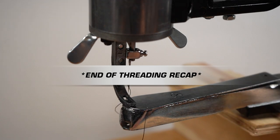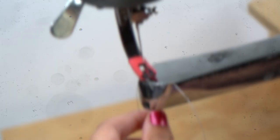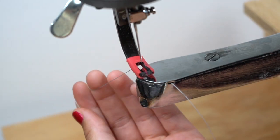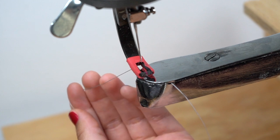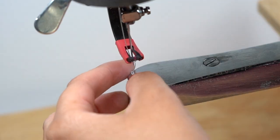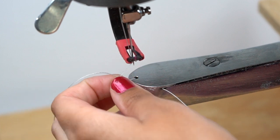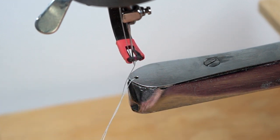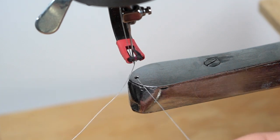We're almost ready to sew at this point. We just need to hold that thread that we just put through the needle while doing one full rotation on our hand crank and that's going to loop around and bring out the bobbin thread. We can just use our hands or tweezers to pull that out of the hole. Both the bobbin thread and the thread from the needle should be poking out for proper sewing.